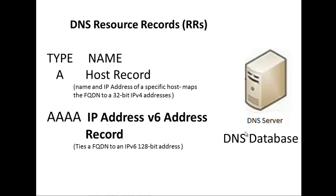We want to look at the A record, which is a host record. The host record contains the name and the IP address of a specific host on the network. This resource record is going to map the fully qualified domain name — that is the computer name plus the domain name. For example, if your computer was called computer1, the fully qualified domain name would be computer1.contoso.com. The resource record maps this fully qualified name to the 32-bit IPv4 address — this type is called an A record.